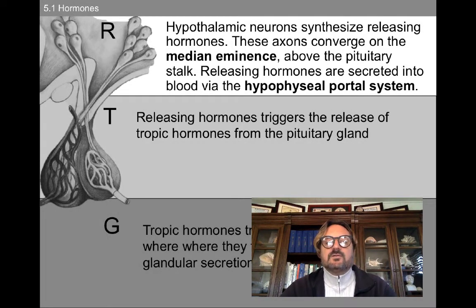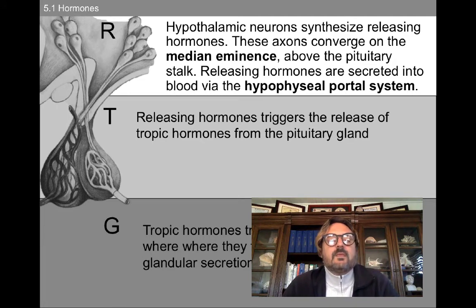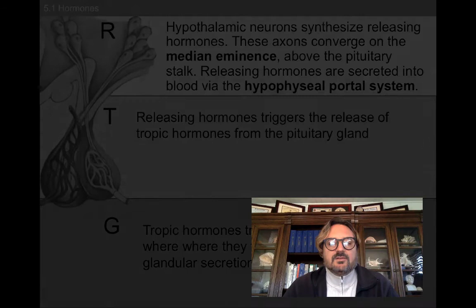For releasing hormones, hypothalamic neurons synthesize releasing hormones, and these axons converge on the median eminence, which is above the pituitary stalk. The releasing hormones are secreted into the blood via the hypophyseal portal system. Releasing hormones then trigger the release of tropic hormones from the pituitary gland, and these tropic hormones travel to glands in the body, where they trigger the release of glandular secretions.